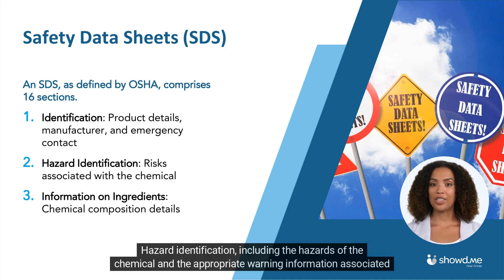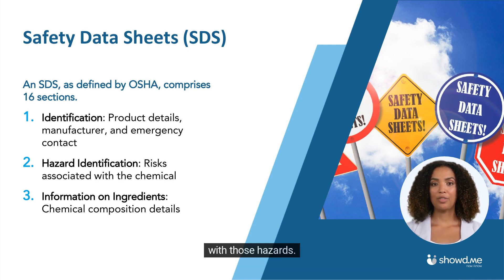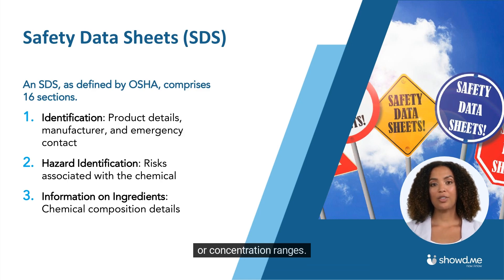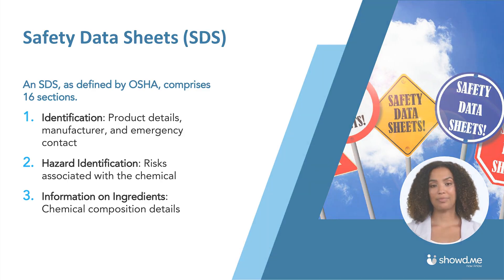Hazard identification, including the hazards of the chemical and the appropriate warning information associated with those hazards. Information on ingredients, including information on the chemical ingredients and their concentrations or concentration ranges.